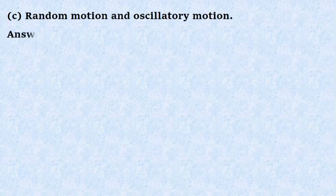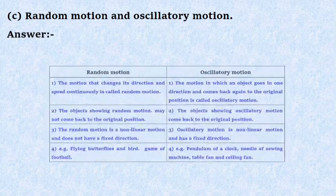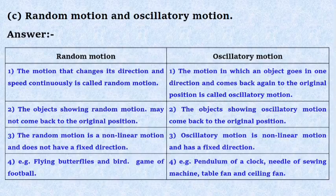C. Random motion and oscillatory motion. Answer: In random motion, the motion that changes its direction and speed continuously is called random motion. The motion in which an object goes in one direction and comes back again to the original position is called oscillatory motion.